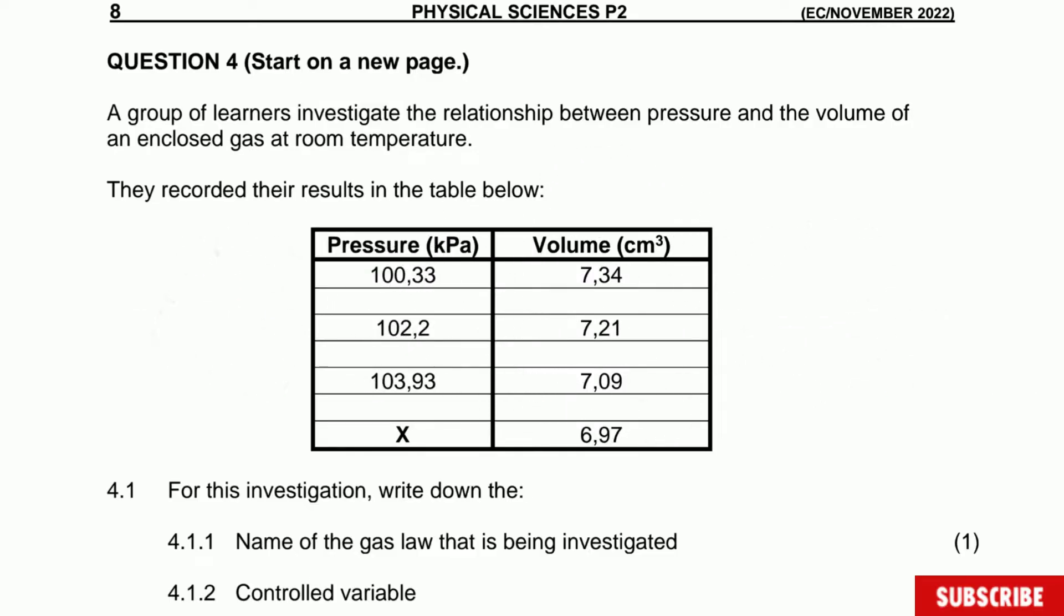The question is: a group of learners investigate the relationship between pressure and the volume of an enclosed gas at room temperature. They recorded the results in the table below and you see a table here. On one column they record pressure and on the other one they record volume.